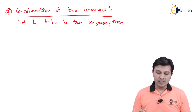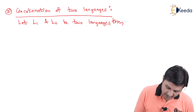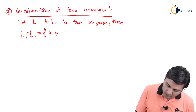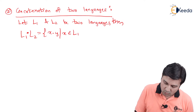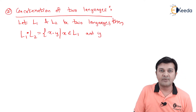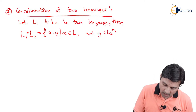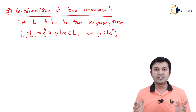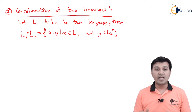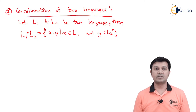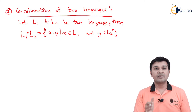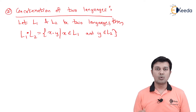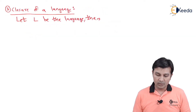The next operation is concatenation of two languages. It is defined as: let L1 and L2 be two languages, then L1 dot L2 will be the set of all X dot Y such that X belongs to L1 and Y belongs to L2. So L1 union L2 is simply joining, whereas L1 dot L2 is the concatenation operation — everything in the first set is concatenated one by one with everything in the next set.